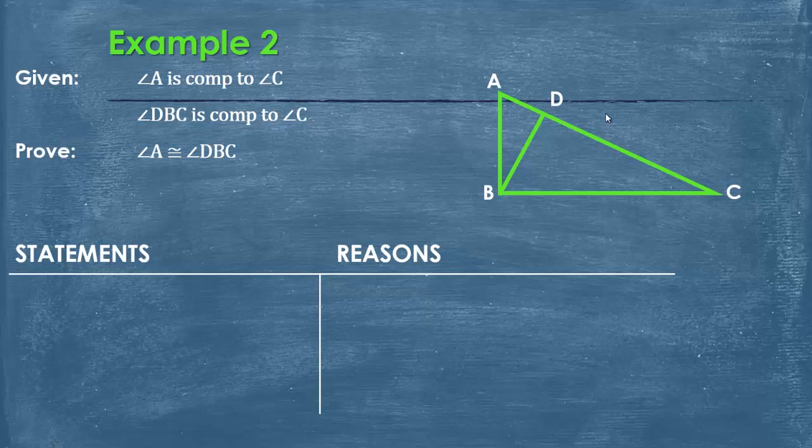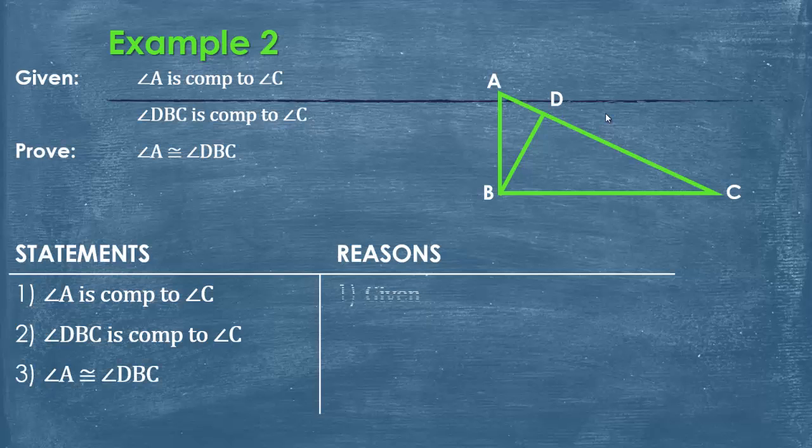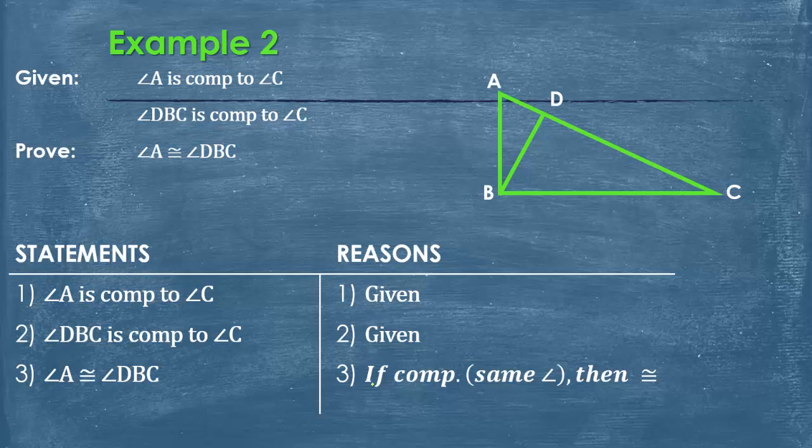So our statements, again, are givens and are proved. And our reason would be if complementary to the same angle, then the two angles are congruent. Easy enough concept. Pretty simple.